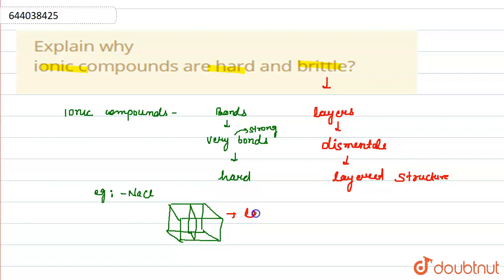A layered structure can be formed. If we break this complete structure, then easily layers can be formed. That's why these are brittle. So I hope you understand that ionic compounds are hard because of their strong bonds and brittle because of the formation of the layered structure.